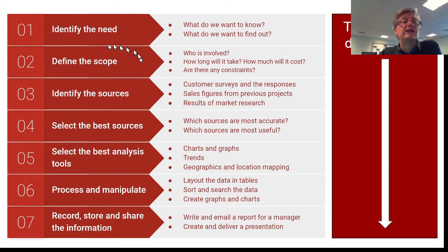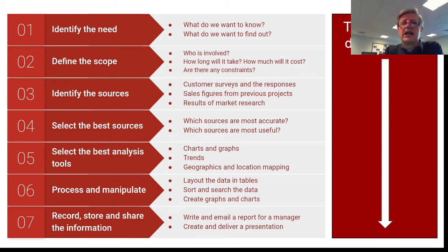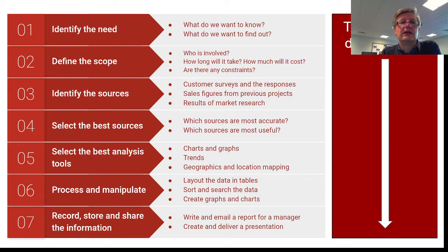The second stage is to define the scope of the project. This is where we start to think about who's going to be involved — is it the NHS, is it the public, GPs, nurses and practitioners? Who's going to make that app? How long is it likely to take? How much is it going to cost? Are there any constraints, any things we need to consider that might stop us from properly developing this product, this app, this system?